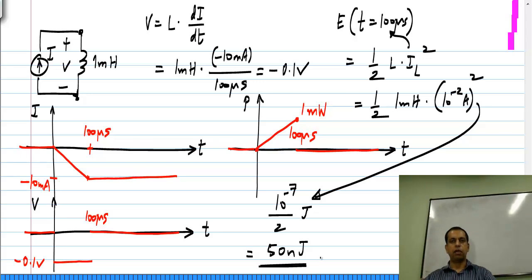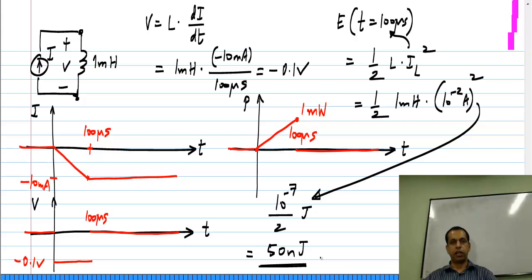To calculate the energy in the inductor at t = 100 µs, we use (1/2)·L·I_L², where I_L is the current at t = 100 µs. This gives (1/2) × 1 mH × (10 mA)² = (1/2) × 10⁻³ × 10⁻⁴ = 50 nanojoules of energy stored in the inductor. You should be able to carry out similar calculations of voltage, power, and energy for arbitrary variations of current in the inductor.